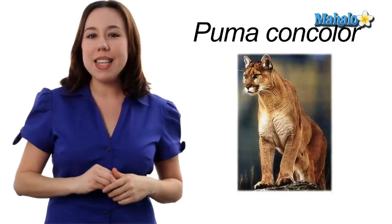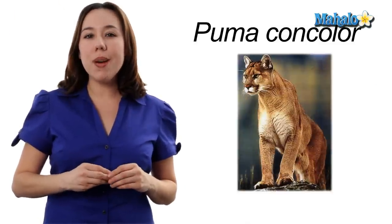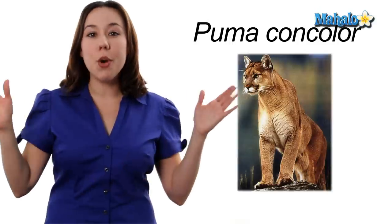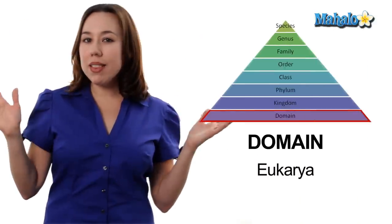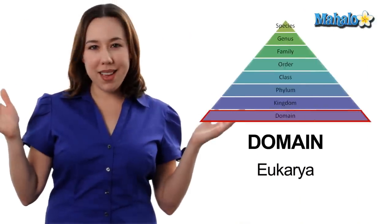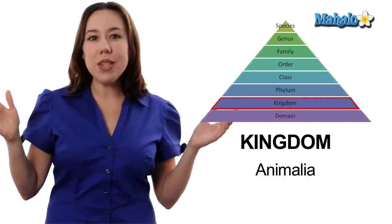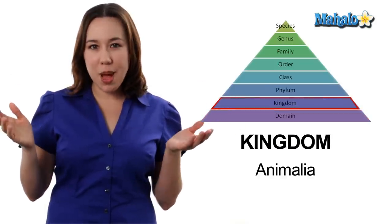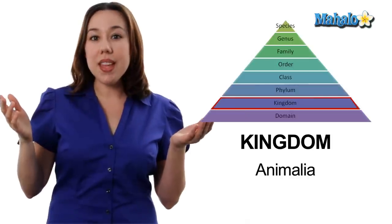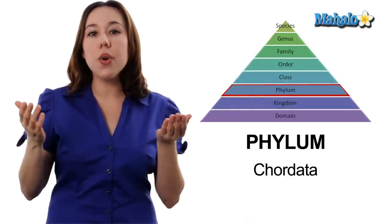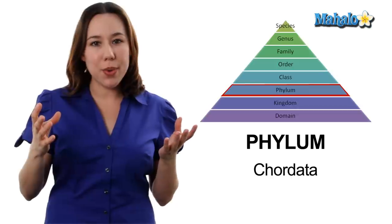Let's take an example: our mountain lion. We're going to take our mountain lion and classify it all the way from domain to species. Our mountain lion is going to be in domain Eukarya, or the eukaryotes. It's then going to be in kingdom Animalia, or the animal kingdom. Then we have phylum Chordata, or the chordates — these are organisms that have a backbone.